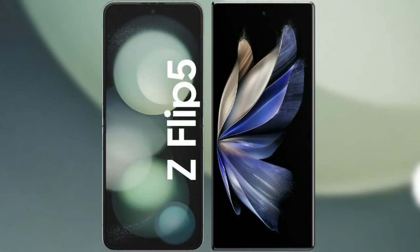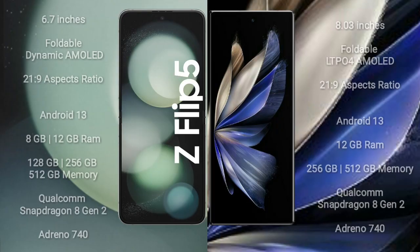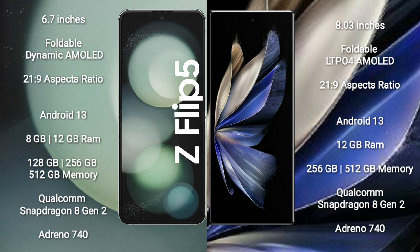I will compare the new Samsung Galaxy Z Flip 5 with Vivo X Fold 2. Samsung Galaxy Z Flip 5 comes with a 6.7-inch foldable dynamic AMOLED display with 21x9 aspect ratio. Vivo X Fold 2 comes with an 8-inch foldable LTPO AMOLED display, also with a 21x9 aspect ratio.